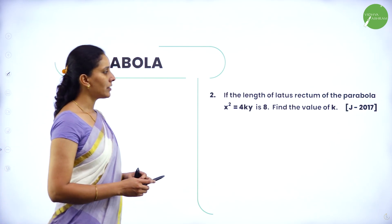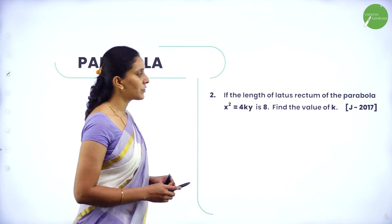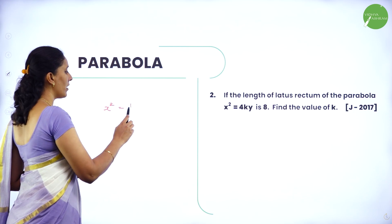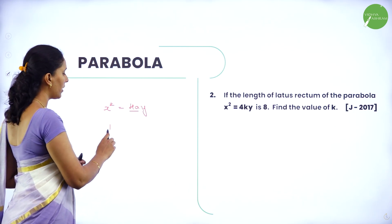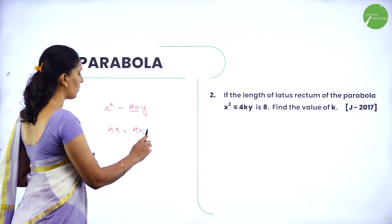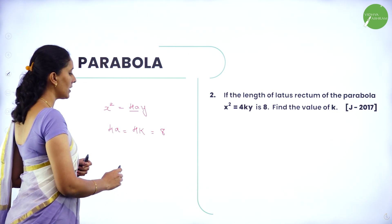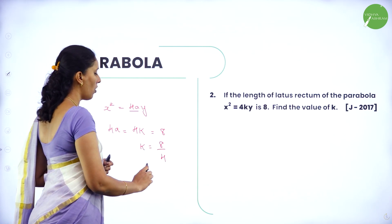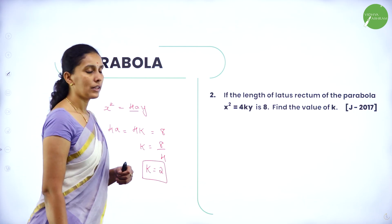Next: if the length of latus rectum of the parabola x² = 4ky is 8, find the value of k. We compare this with x² = 4ay, so 4a = 4k, which equals 8. Therefore k = 8 divided by 4, so k = 2.